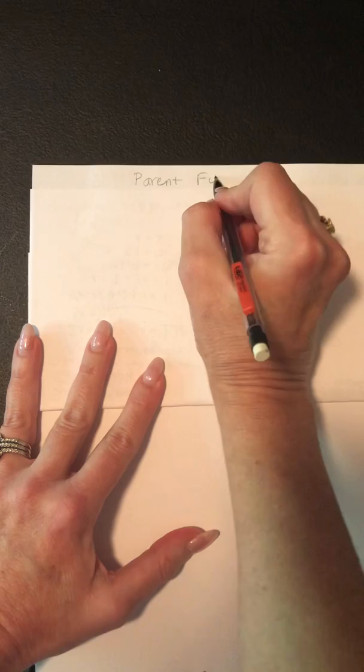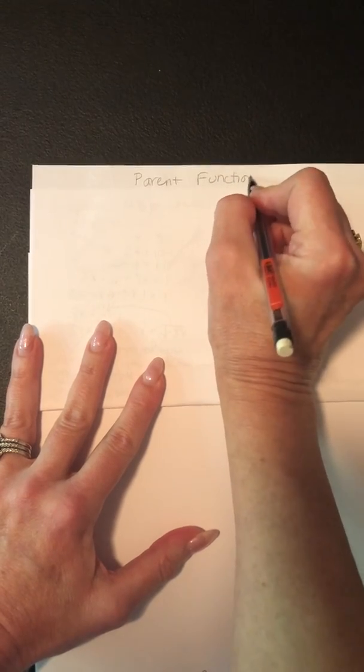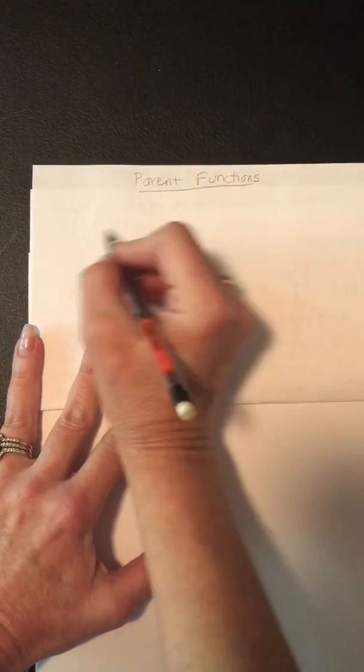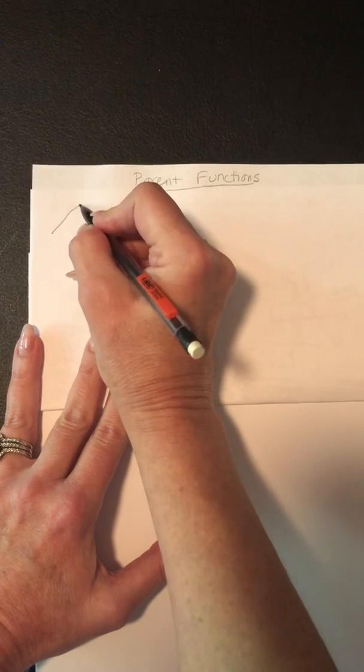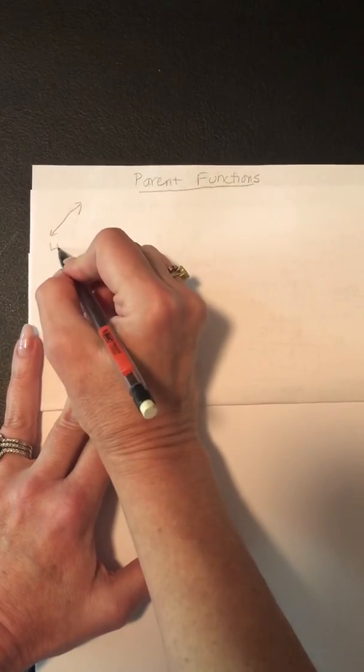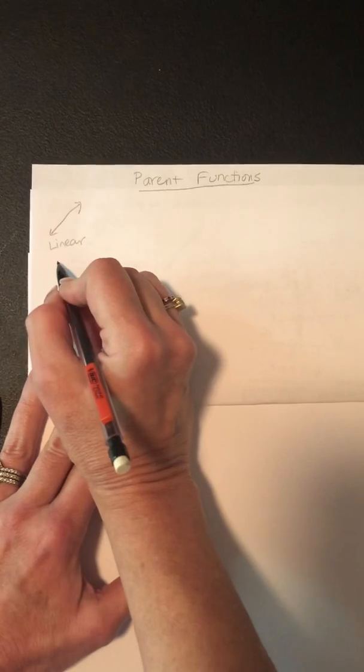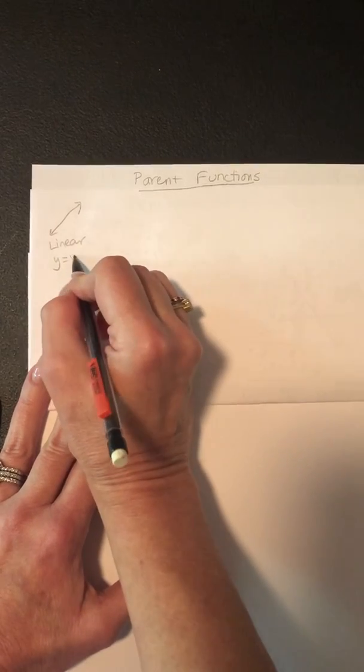So the parent functions are, for example, there's the linear one, and that's linear, because when you graph it, it's a line. And the parent function equation is y equals x.